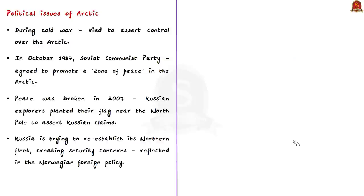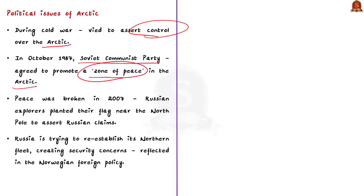To fully understand Arctic exploration, we need to know the political story behind the region. During the Cold War, major powers wanted to control the Arctic. At the end of the Cold War, the Soviet Communist Party agreed to promote a zone of peace in the Arctic. However, this decision was broken in 2007, when Russian explorers planted their flag near the North Pole to assert Russian claims in the Arctic region. Other nations found this move provocative.